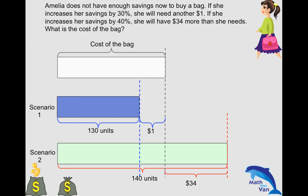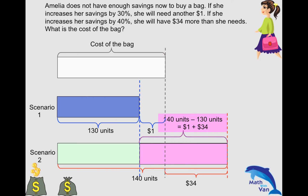Comparing scenario one and scenario two, we can work out the difference in units and the difference in dollar value. The difference is indicated by the pink portion. The difference in units is 140 units minus 130 units, which is 10 units. For the dollar value, it is one dollar plus 34 dollars, giving us 35 dollars. So this gives us an equation to solve.